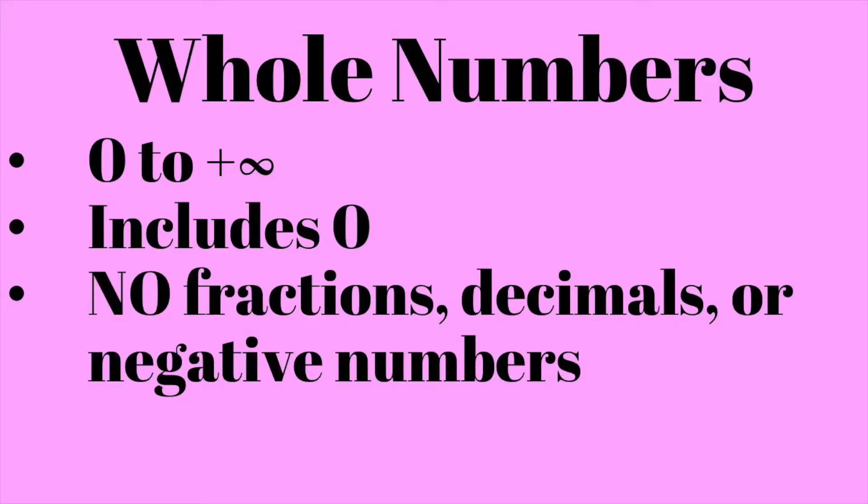An even smaller subset of that is whole numbers. When we usually talk about them in daily life, we talk about numbers that don't have percentages or decimals. Whole numbers in the mathematical sense are exactly that — they don't have any fractions or decimals like integers, but they are also not negative. So whole numbers must start with zero and include zero all the way to positive infinity.